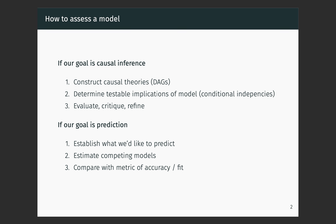We may not be interested in causation at all. We may be interested in understanding how likely it is to rain on Tuesday, or in the context of criminal justice, how likely someone is to commit a violent offense — for example, predictive forecasting for pretrial release. Our first goal in that context is to establish what we'd like to predict. Then we estimate competing models, thinking about the panel of variables and specifications that may help us understand our outcome, and compare those models with some metric of accuracy or fit.